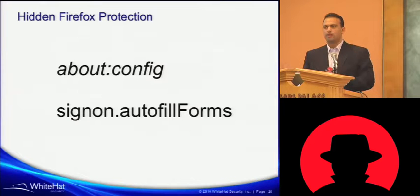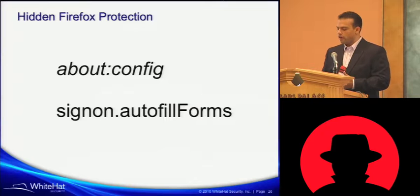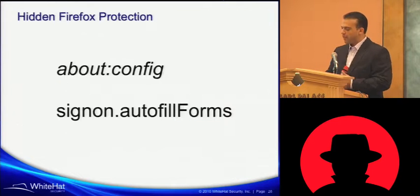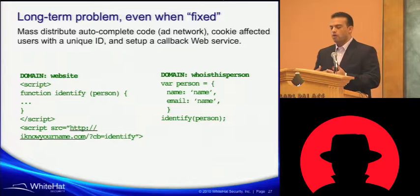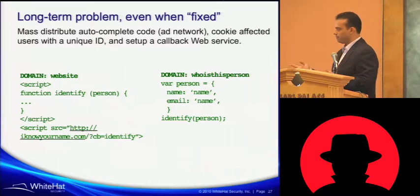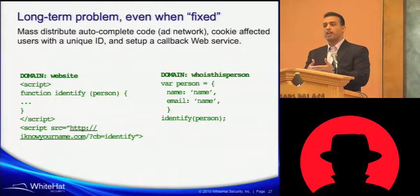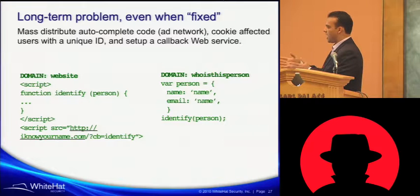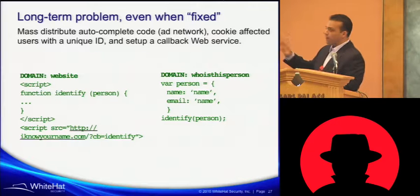We have all this information — theoretically speaking, we are the bad guy. We have put this out there, all this malware JavaScript code out on the wire, put it into an advertising network. They steal the person's real name, email address and respond with a cookie on the site. So now their email address — standard web bug — email address, name, I give you a cookie back on whoisthisperson.com.